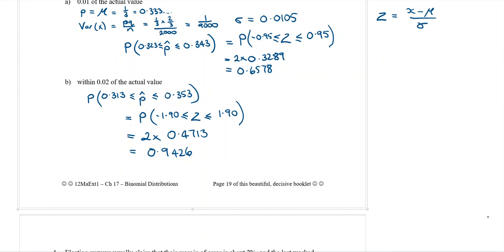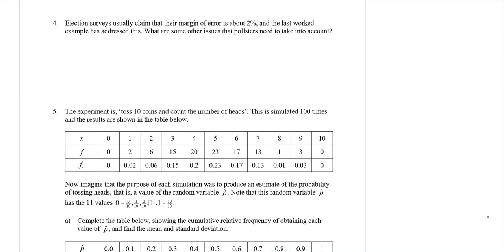Over 94% of results are within 0.02 of the actual value — because these scores aren't very spread out, they're all quite close together.